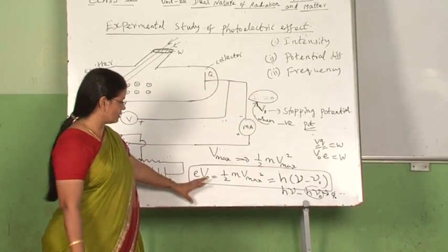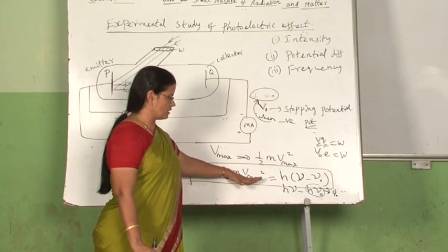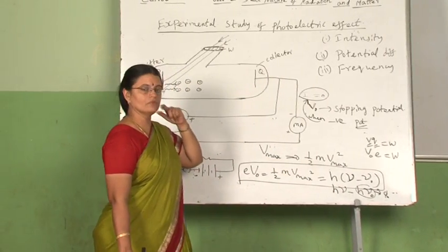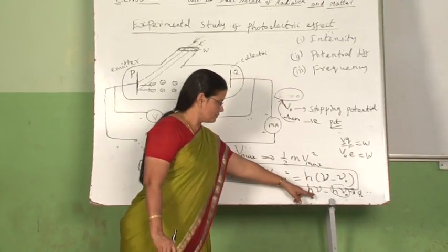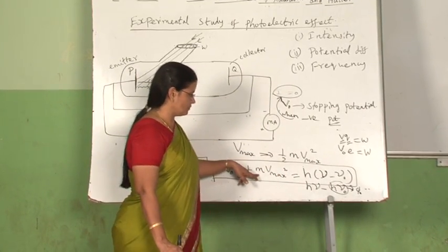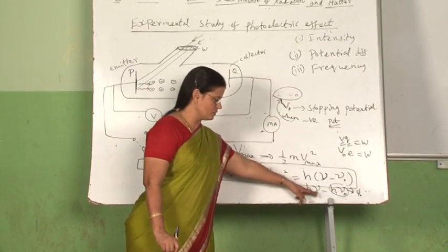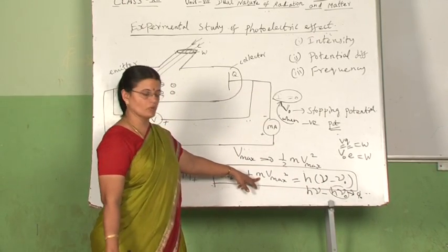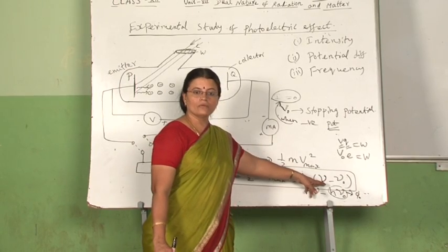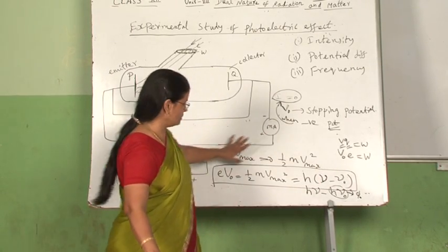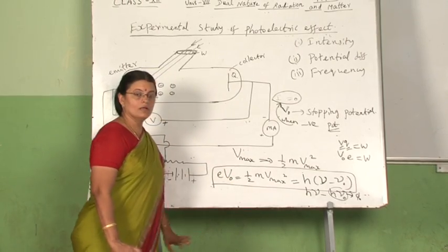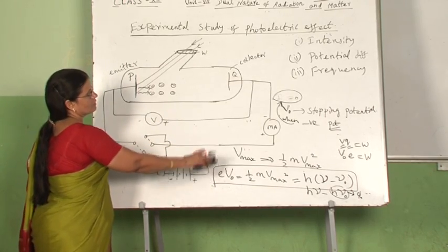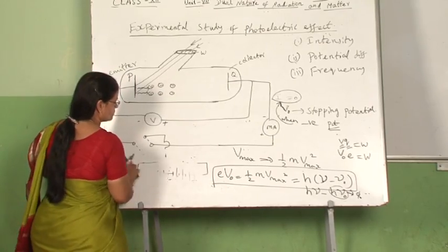From Einstein's photoelectric equation, we can clearly understand that kinetic energy of photoelectrons depends only on the frequency and not on the intensity of incident radiation. Kinetic energy is directly proportional to frequency, h being constant. Therefore, intensity is not going to affect the kinetic energy of emitted photoelectrons.